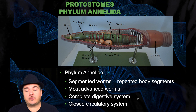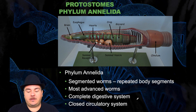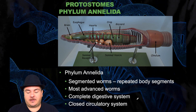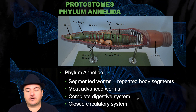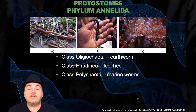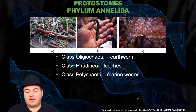The next phylum we're going to discuss is Annelida — the segmented worms. They have repeated body segments and are the most advanced worms. They have a complete digestive system and a closed circulatory system. Examples include earthworms, leeches, and marine worms.